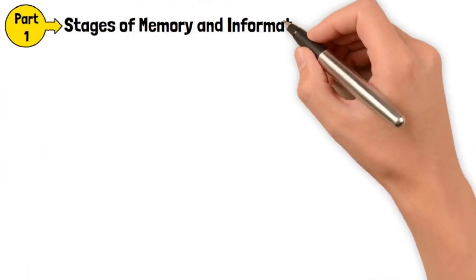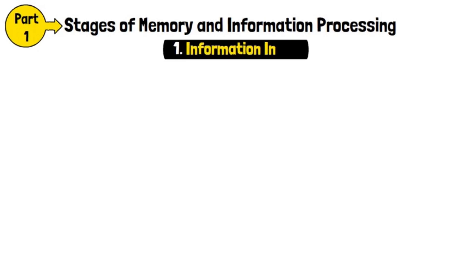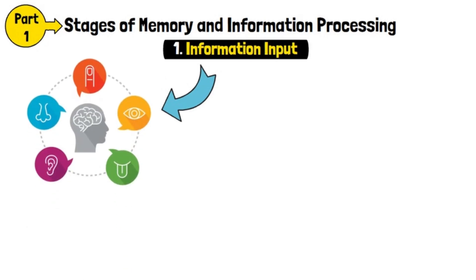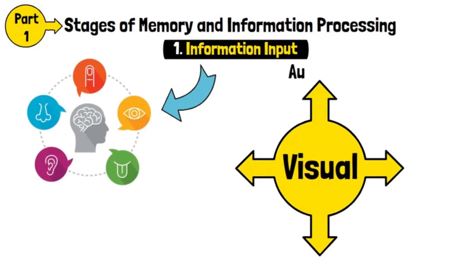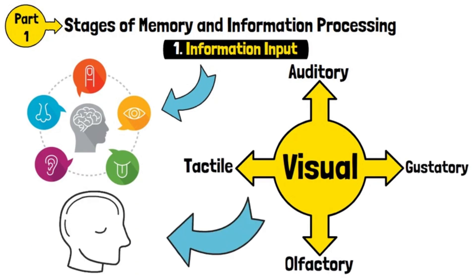Stages of Memory and Information Processing. Information Input: This is the stage where sensory information from the environment is received by the brain through the senses. Visual, auditory, gustatory, olfactory, and tactile inputs are absorbed by specialized areas of the brain.